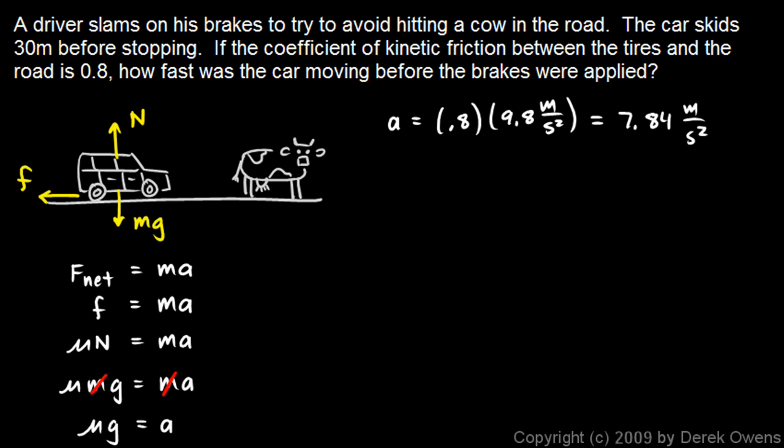Now I can use that along with the other information given in the problem to find the velocity. I'll use this equation: v² equals v₀² plus 2aΔx. This v here is the final velocity, I know that's 0. The initial velocity is what I'm looking for, and I know the acceleration because I just found it, and I know Δx because that was given in the problem - 30 meters. So let's just rearrange this equation algebraically. We get v₀² is equal to v² minus 2aΔx.